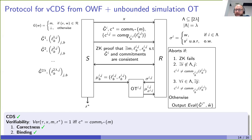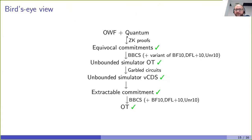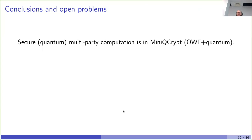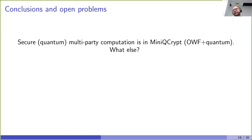This finishes the proof, showing that from one-way functions and quantum resources, we can build extractable commitments and OT. In summary, we show that secure multi-party computation is in MiniQCrypt — it can be built from one-way functions and quantum resources.